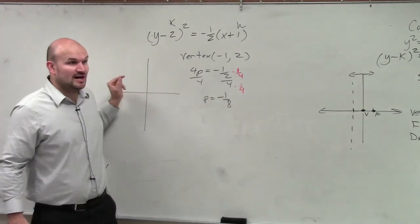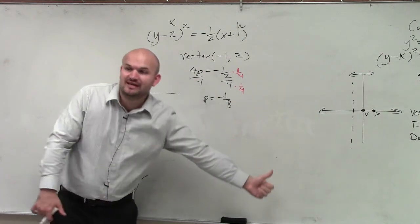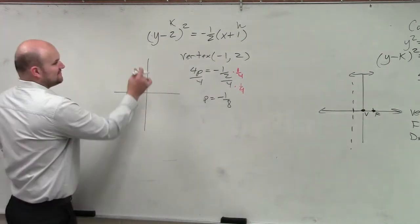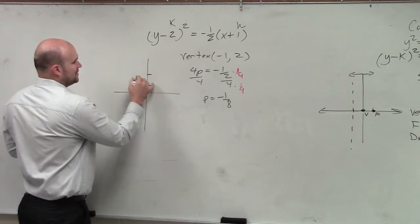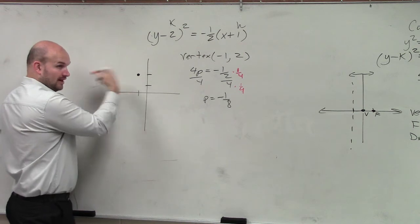So if p is negative, that means we're going to go to the left. So let's find this vertex, negative 1, 2. If p is going to the left 1, right?